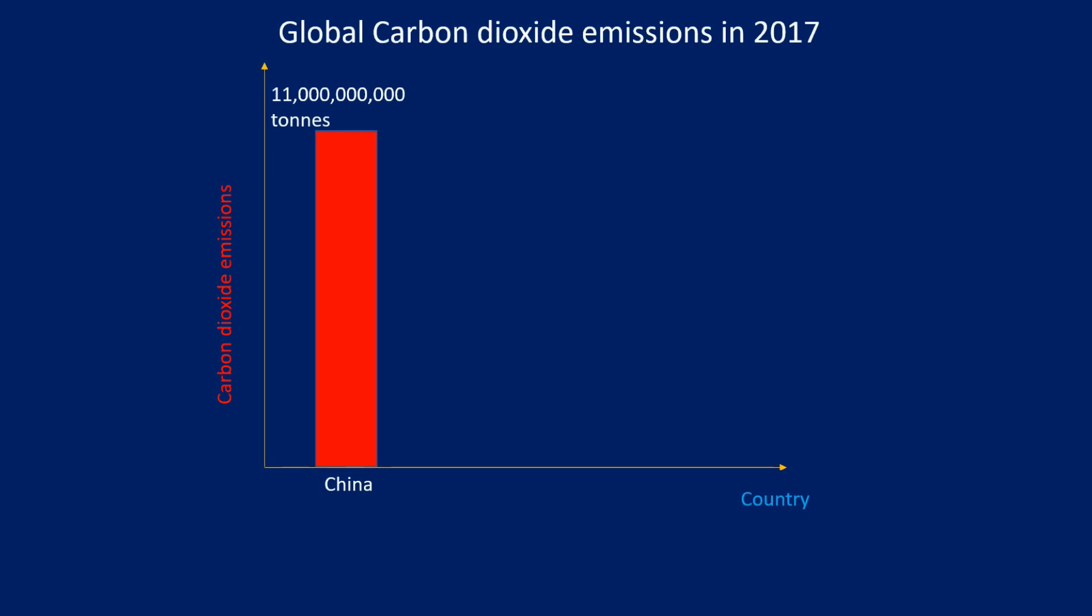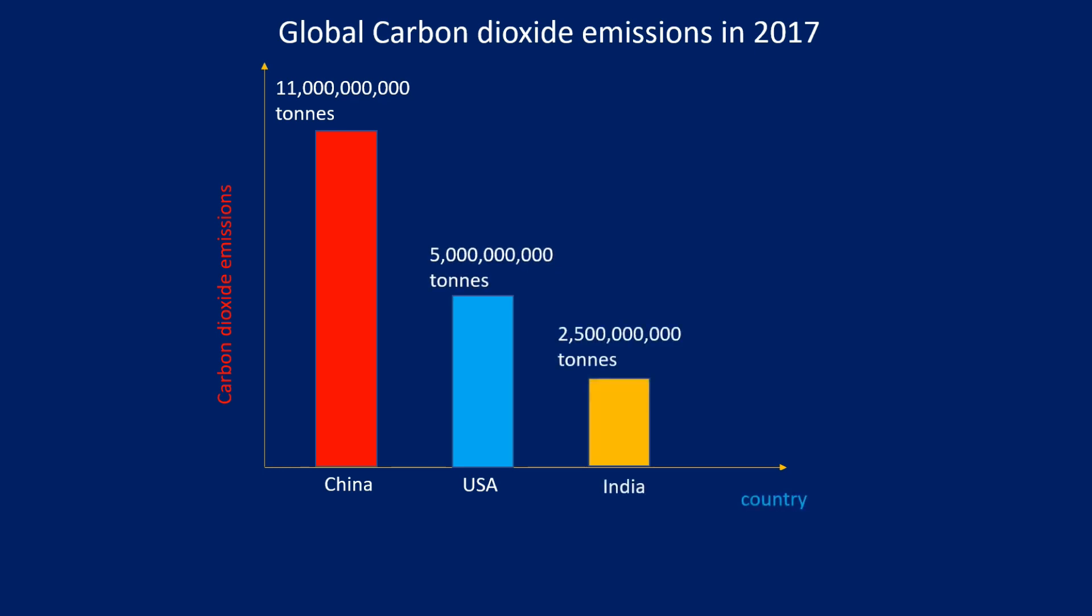In 2017, China, the world's most populous country, became number one in CO2 emissions with 11 billion tons. It contributes to 29% of the global CO2 emissions. The United States comes second with 14%, and India comes third with 7%.